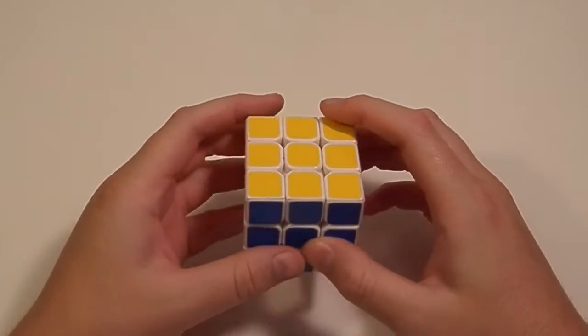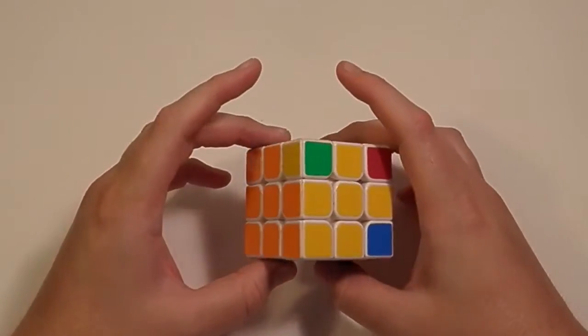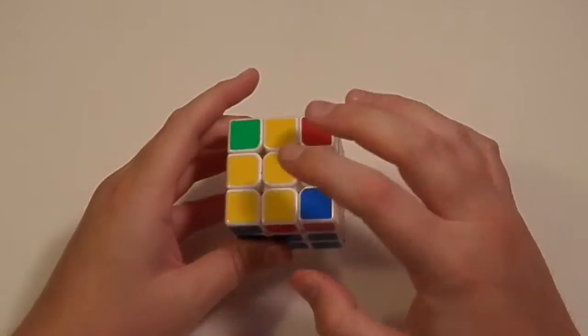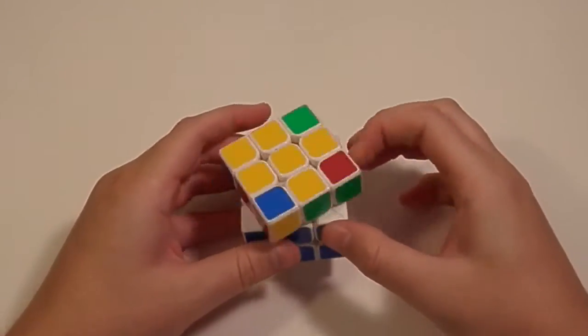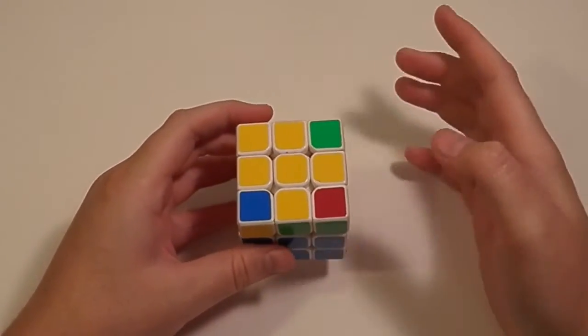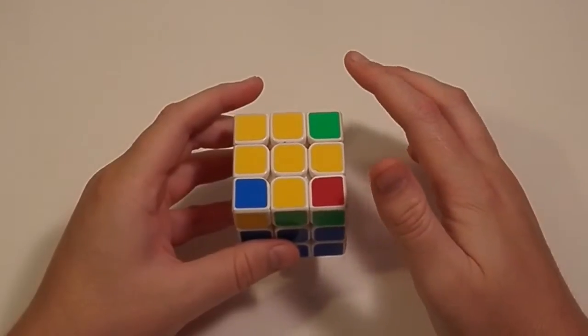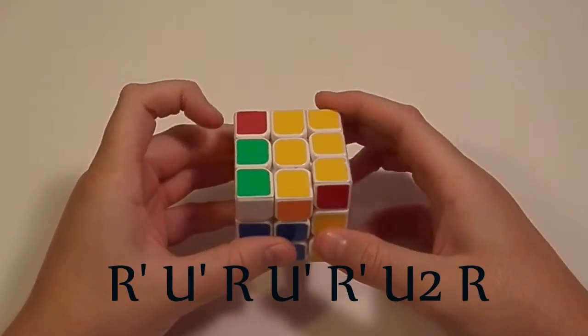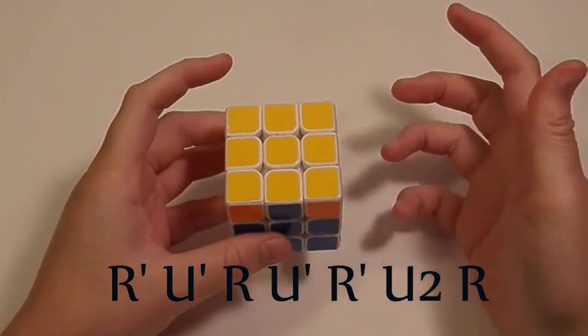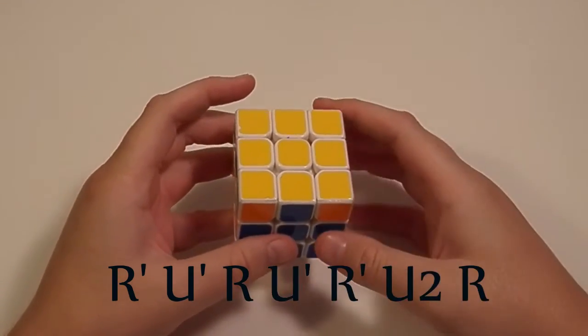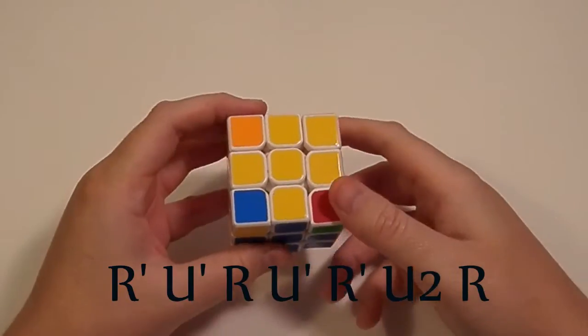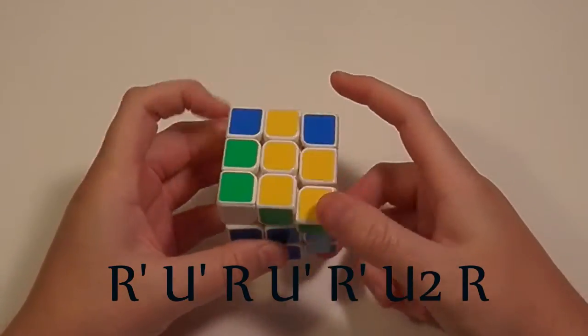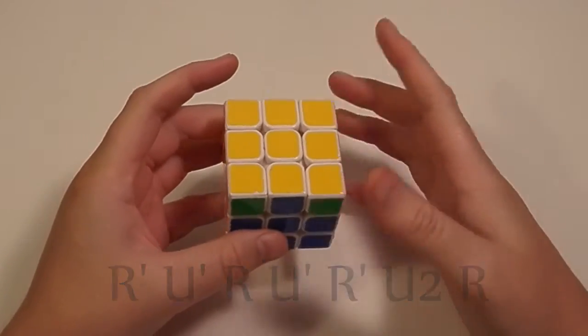Now let's move on to Anti-Sune. With Anti-Sune you've already assessed the layer. You see that this is not a Sune but it's an Anti-Sune. So the way you do this is with the first algorithm you do R' U' R U' R' U2 R and I really don't have a good execution for that. The way I do it is just I don't even use double flicks and that seems to be pretty quick.